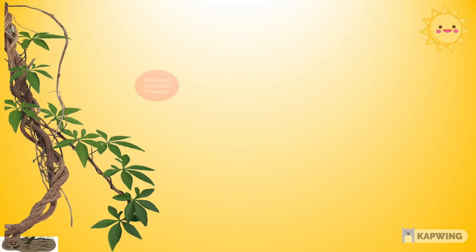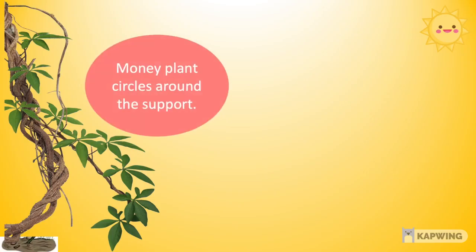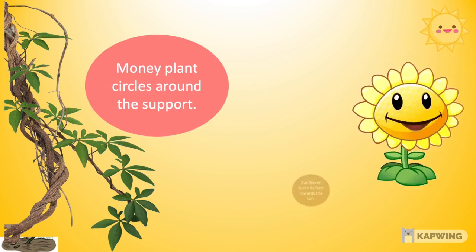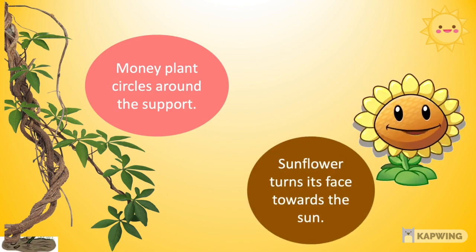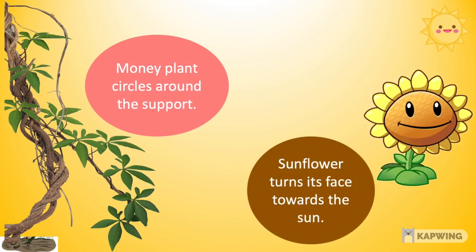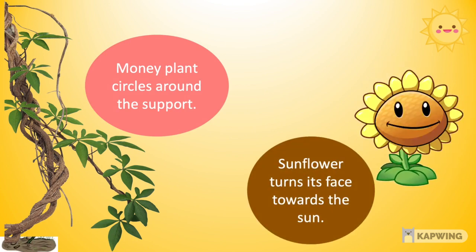For example, money plant circles around the support, sunflower turns its face towards the sun, etc.